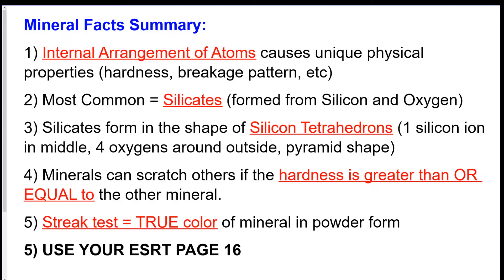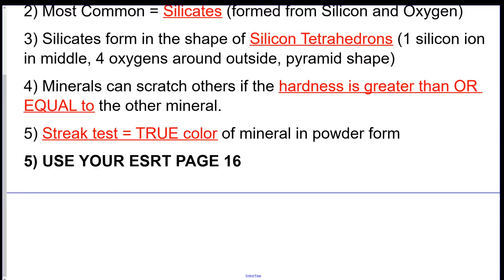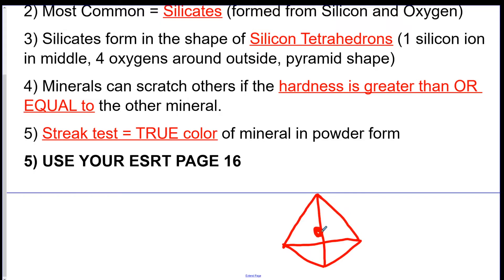Minerals can scratch others if the hardness is greater than or equal to the other mineral — we just talked about that. The streak test is the true color of the mineral in powder form. Also, use your reference table, page 16. Now I'm going to draw a silicate for you — it's like a pyramid shape, it's 3D. There would be a silicon ion in the middle, and then four oxygens around the outside. It's always in a pyramid: silicon in the middle, four oxygens on the outside.